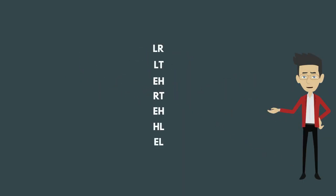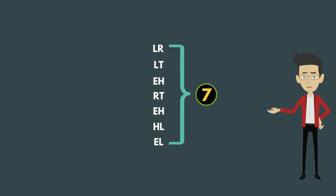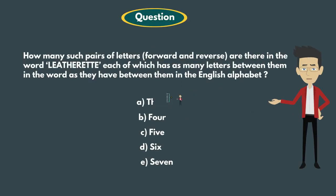Calculating both forward and reverse order, we get a total of seven. So the answer is option E, seven.